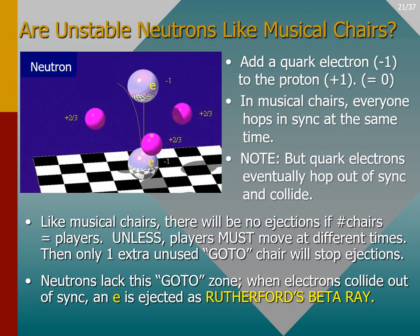In the GUMMI models, the neutron is an unstable oscillator and therefore radioactive. To model a neutron, the 3D GUMMI proton just has a second electron added to it. The net particle charge is now zero — the particle is neutrally charged, and that's where the name neutron comes from.